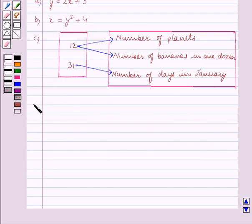Let's start the solution now. In part A we are given y equals 2x plus 3. We have to find whether this relation is a function or not. We know that a relation is a function if each element of domain has a unique image.